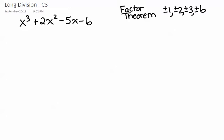Let's try 1. If we sub in 1, we get 1³ + 2(1)² - 5(1) - 6, which ends up being 1 + 2 - 5 - 6, which is not going to work. So let's try -1. -1³ + 2(-1)² - 5(-1) - 6, which leaves us with -1 + 2 + 5 - 6.